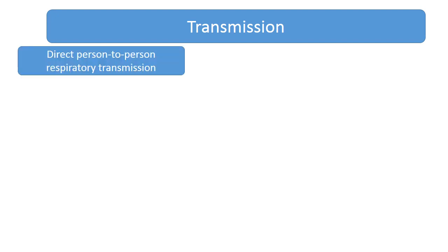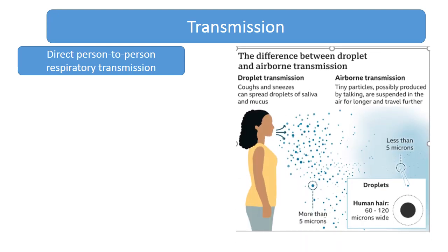COVID spreads by direct person-to-person respiratory transmission. Infectious diseases can be airborne, waterborne, foodborne, or spread through the sexual route or blood. Here, it is respiratory transmission, which is of two types: droplet transmission and airborne transmission. In COVID, it is mainly — almost 99% — droplet transmission. When the patient coughs or sneezes, they spread droplets of saliva and mucus. Usually these droplets are more than five microns and do not travel more than six feet. They fall on nearby things, or if the person coughs straight at your face, it lands in your eyes, nose, and mucous membranes and you get infected.